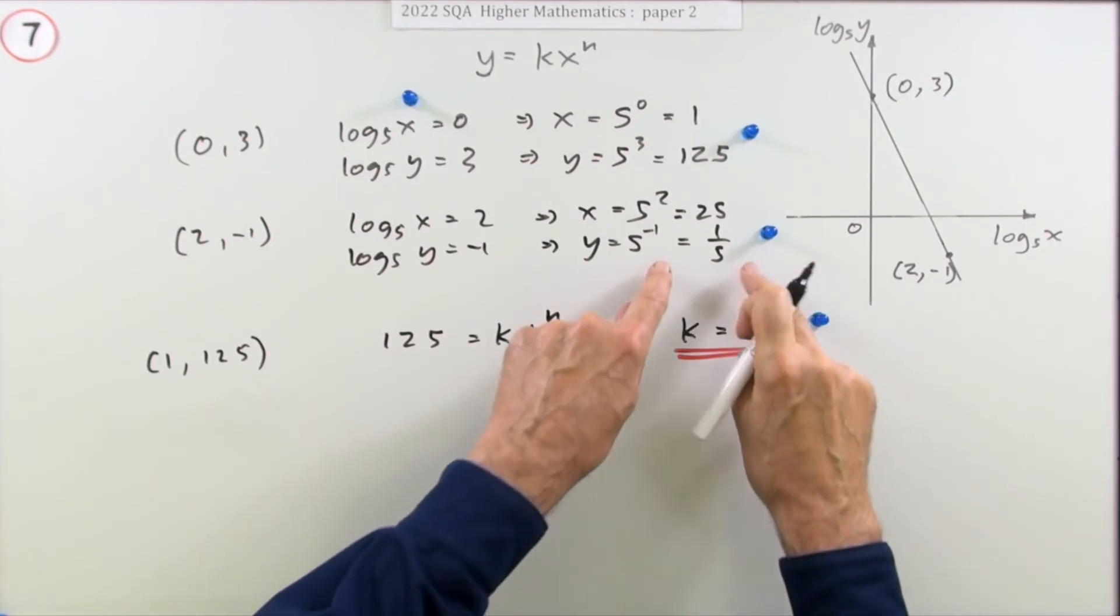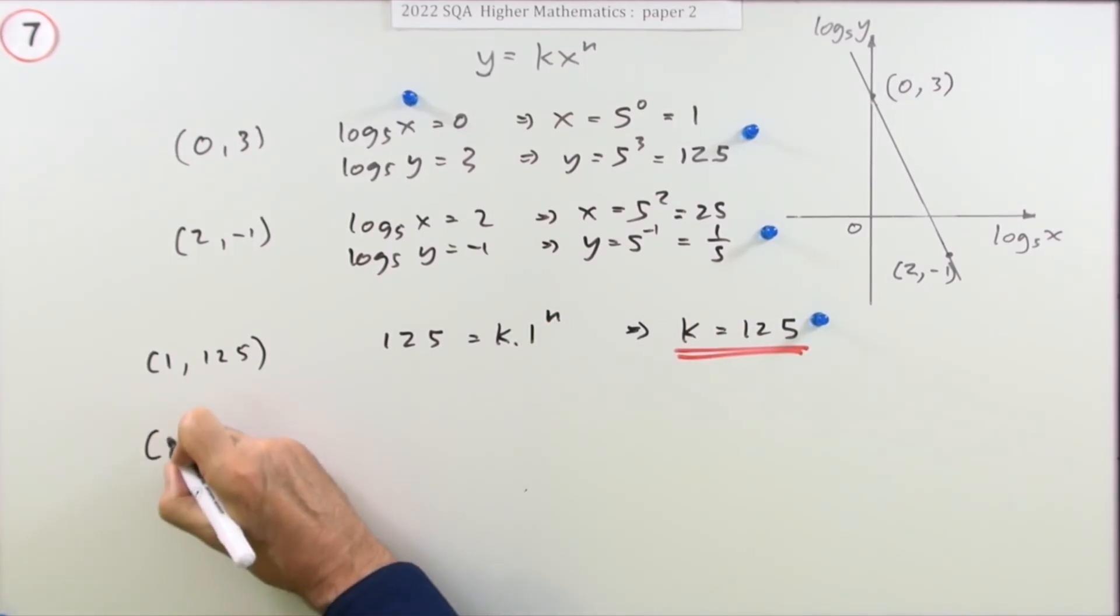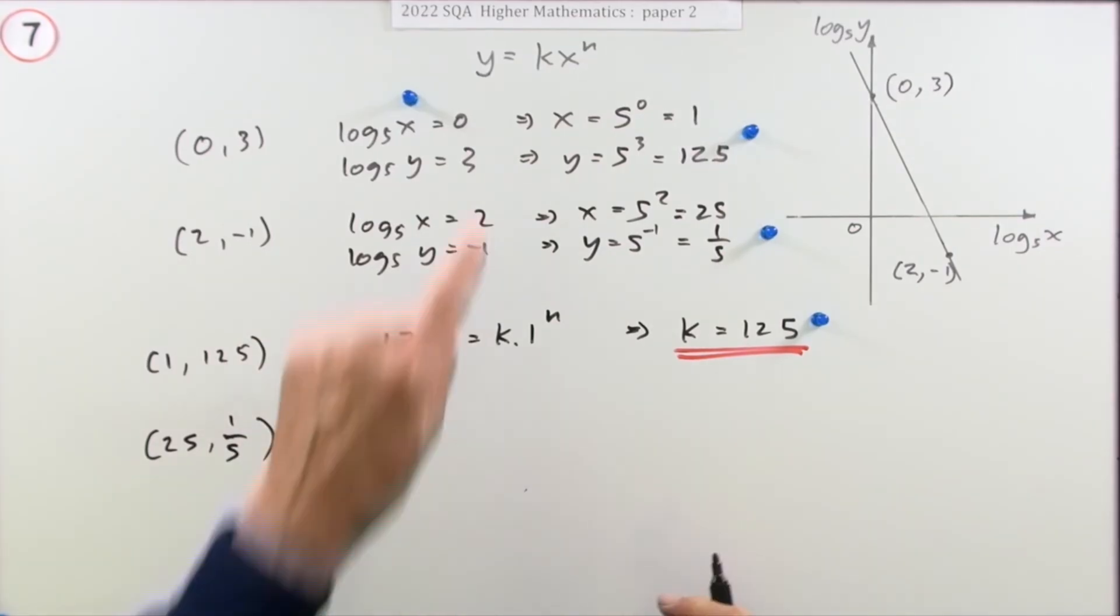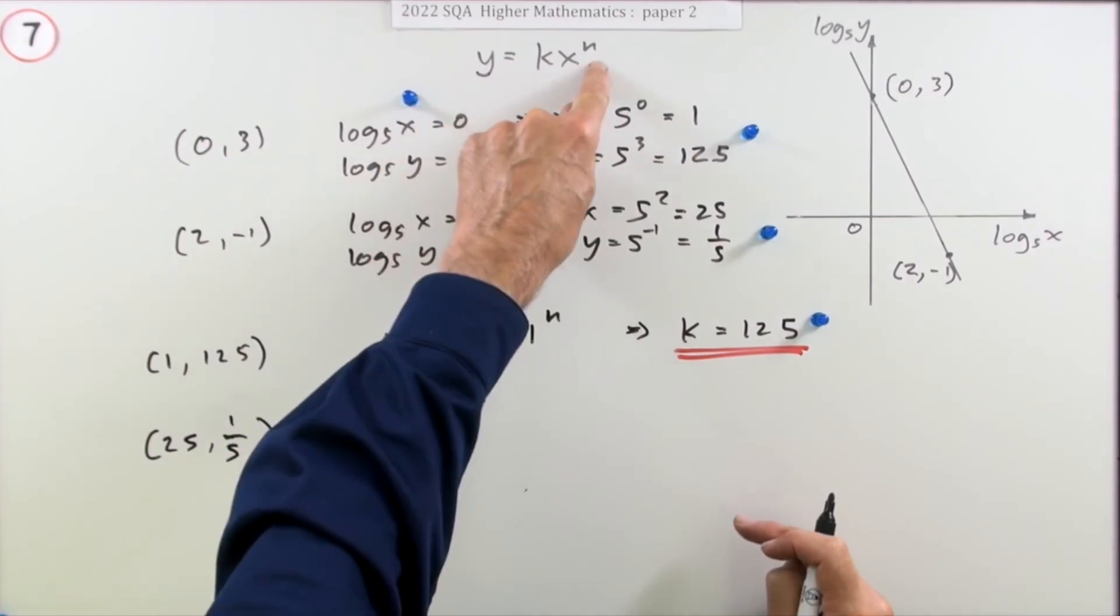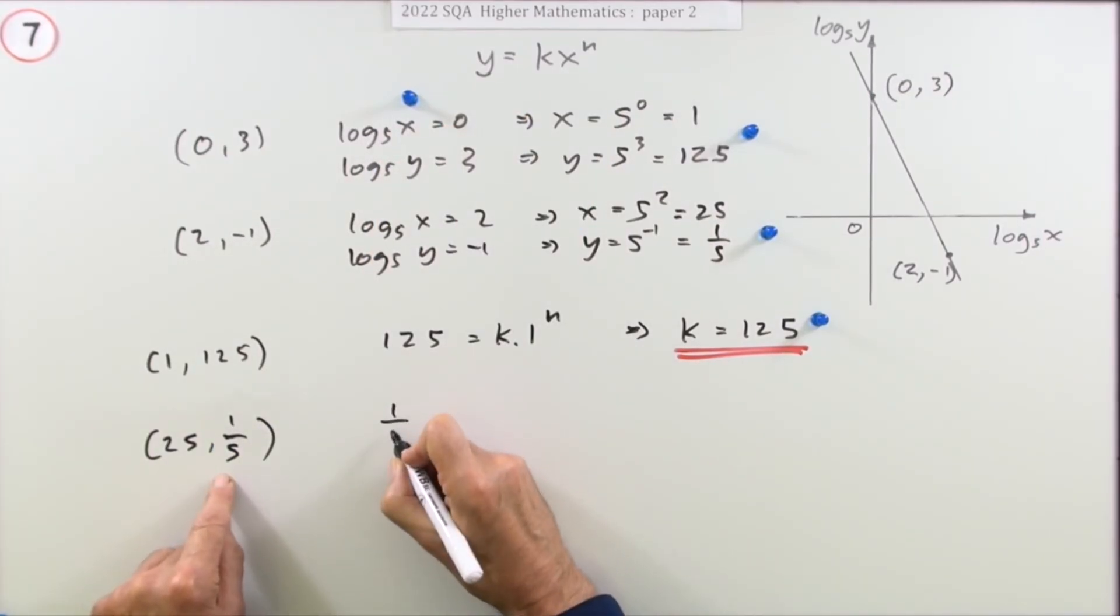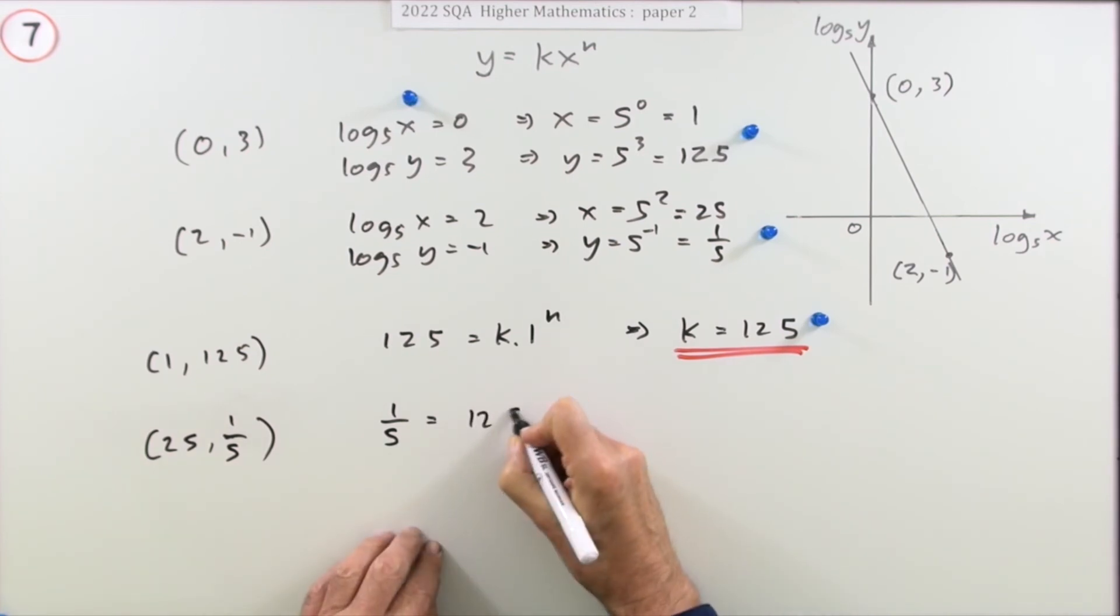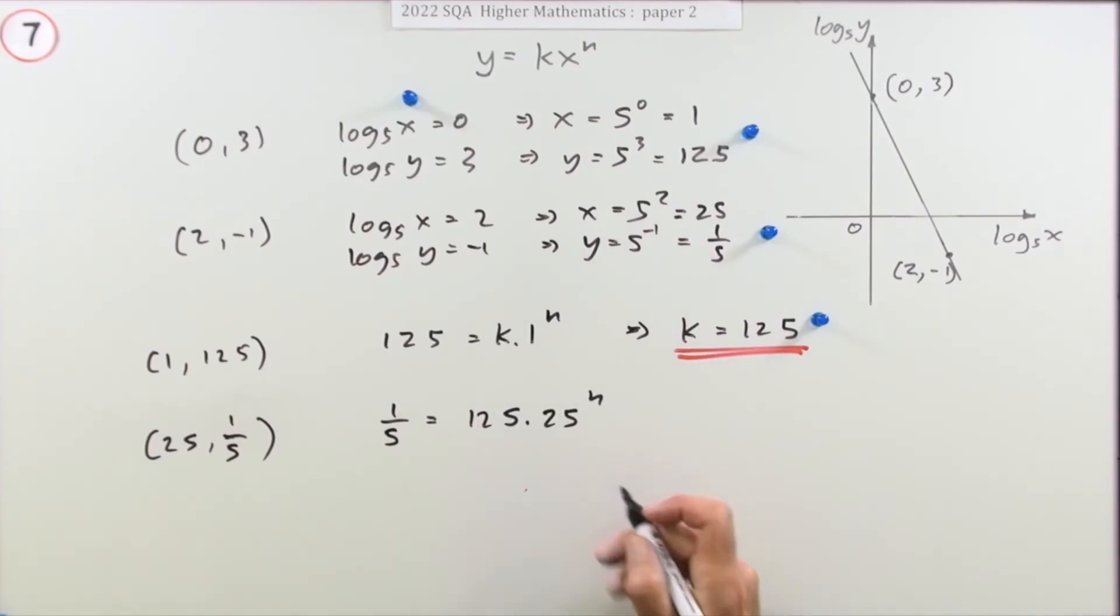Now that you've got that, you can go to the second point, which was (25, 1/5). And feed that in. Now knowing that the k is 125, so there's only one thing left. So that says when y is 1/5 and k is 125 and x is 25, you've got power n. Now this is the point where it may have been easier just to keep the powers there, but it's not going to be that bad. I'm just going to rewrite this. So that means that you've got 25 to some power. Take that across and divide, should be 1 over 625.